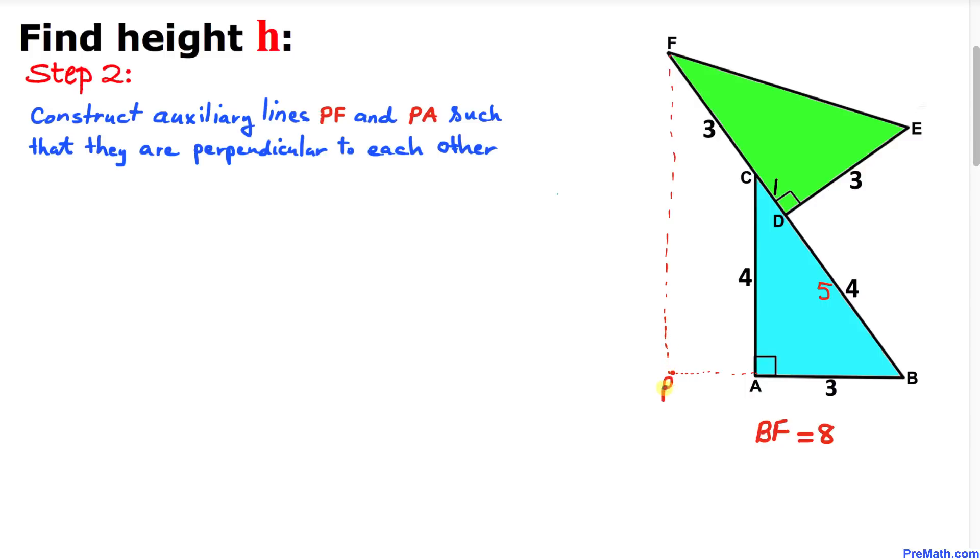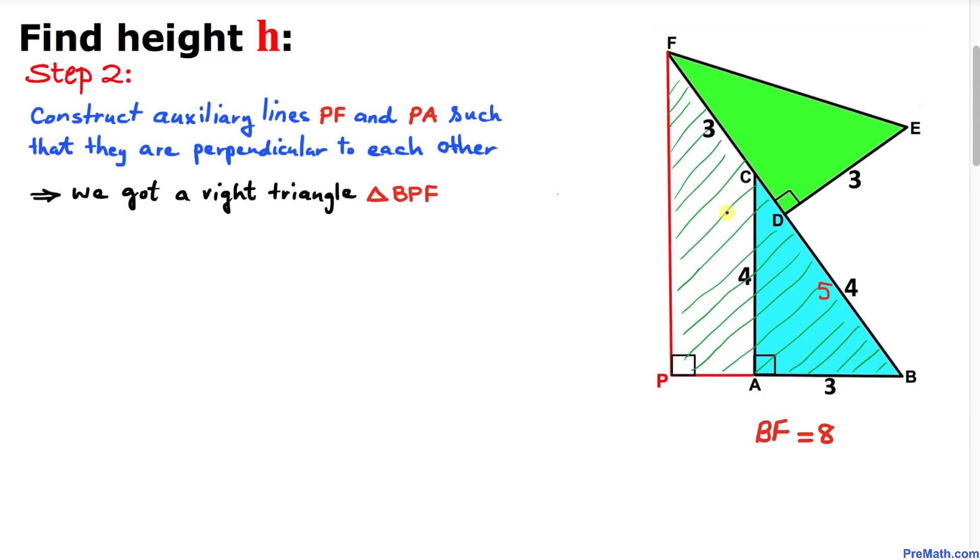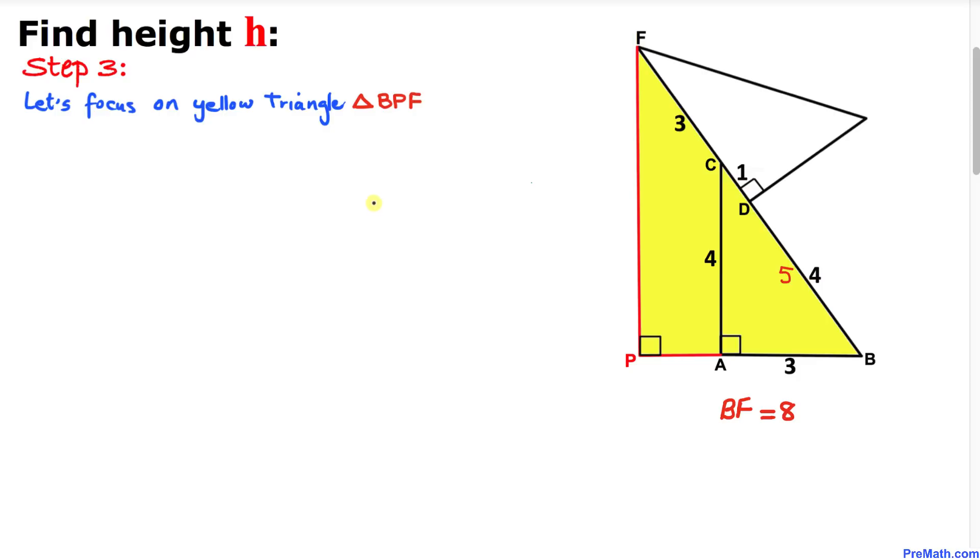Here's our much nicer looking diagram. We can see that we have this right triangle BPF. Here's our next step: let's focus on this yellow triangle, which is a right triangle BPF.